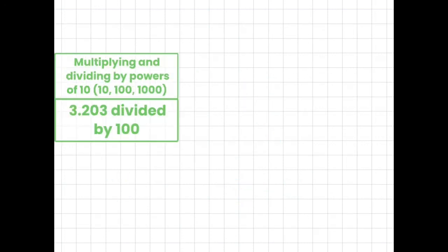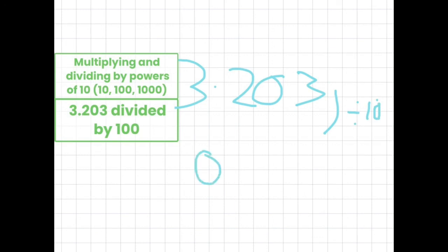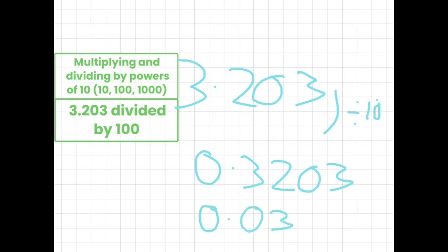3.203 divided by 100. We do 3.203 divided by 10, which would be 0.3203. Then we divide it by 10 again, which would be 0.03203. And that's the answer — 3.203 divided by 100 equals 0.03203.